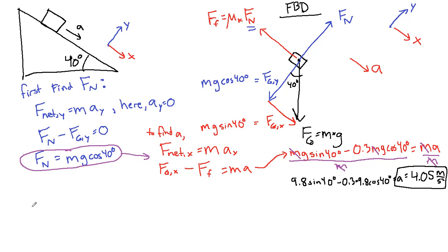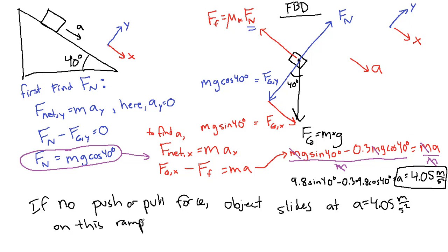And I'm going to make a note here that describes that statement I said before. So if there's no push or pull force, object slides at a equals 4.05 meters per second squared on this ramp, no matter what mass it has.